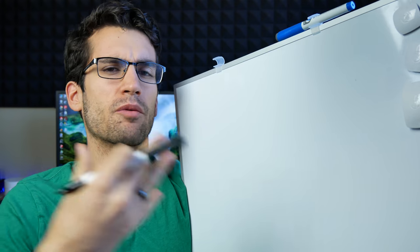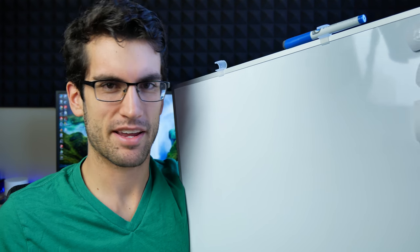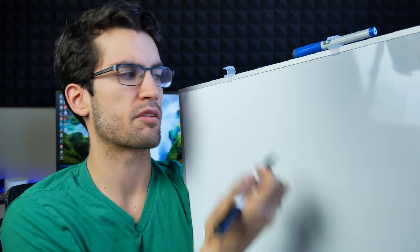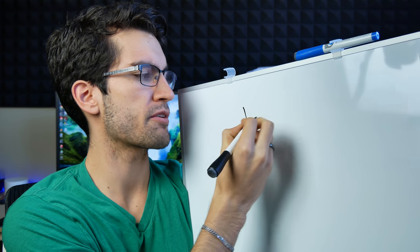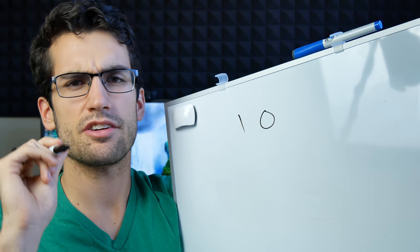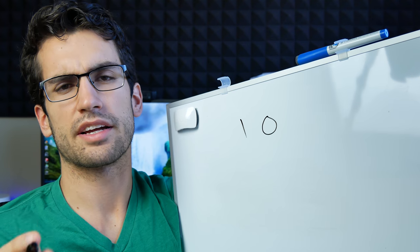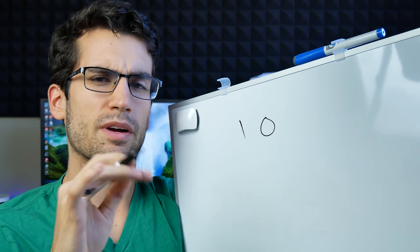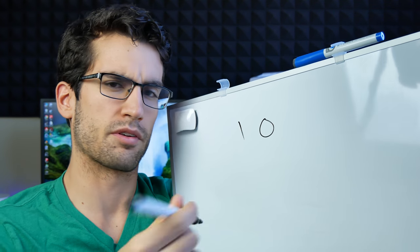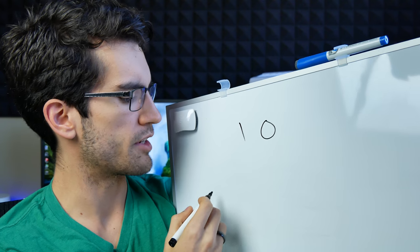Trusty whiteboard here, and in order to explain quantum computers — how they work on a basic level, or as basic as we can possibly make it — we have to understand how the classical computing system works based on binary code using just 1s and 0s. I kind of ran through this in a previous video, but I'll go over it again for those who haven't watched that yet.